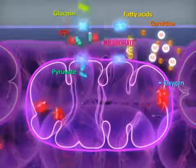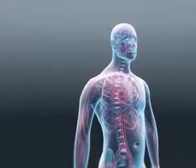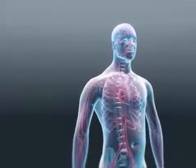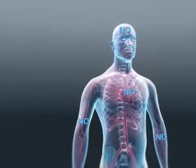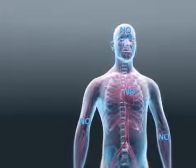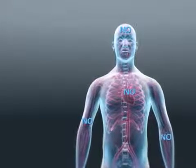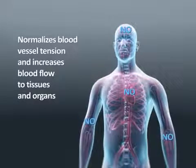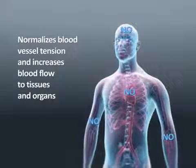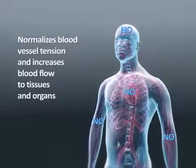Mildronate stimulates the production of nitrogen oxide in the endothelium of blood vessels, which normalizes blood vessel tension and increases blood flow to tissues and organs.